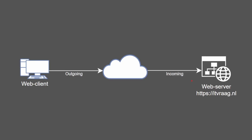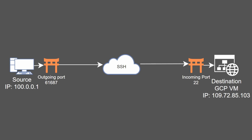A web server mostly accepts incoming connections and rarely makes outgoing ones. A web client trying to open a webpage mostly makes outgoing connections and rarely incoming ones. Another example is when you remote connect to a host using SecureShell. Your computer uses a dynamic port — for example port 61687 — to connect to the remote host on port 22. The remote host has port 22 open, listens for SSH requests, and forwards them to the responsible service.